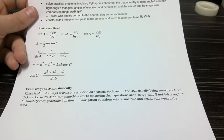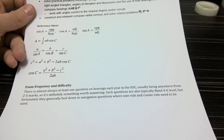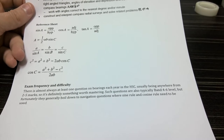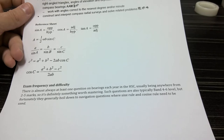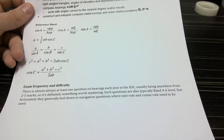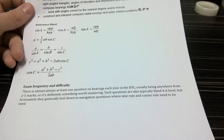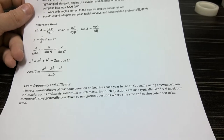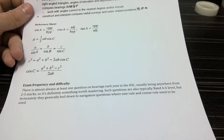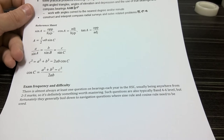Looking at past trial papers and project maths, there's almost always at least one question involving a radial survey, navigation, or maybe both, where you need to create your own diagram and interpret bearings. What it generally boils down to is using the sine rule or cosine rule. As long as you can do that and extract the important information from the question, you'll find it's almost the same question every single time.